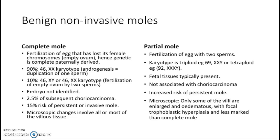One of the immunohistochemistries that can be used to distinguish between complete mole and partial mole is p57. p57 will be negative in a complete mole because there is no maternal DNA, while in a partial mole it will be positive.